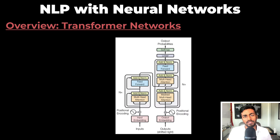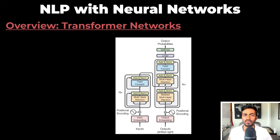Because recurrent neural networks process inputs sequentially — one word at a time — they don't take advantage of parallelization and GPUs very well. To deal with this, transformer neural networks were introduced, and we will talk about transformers more in part two.